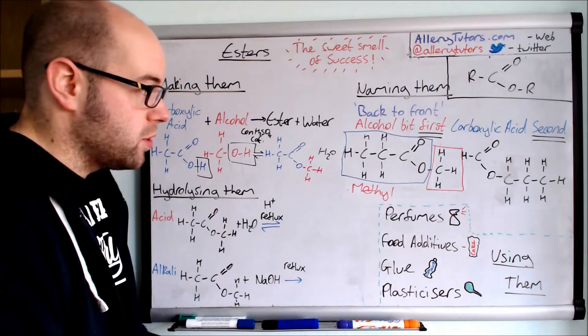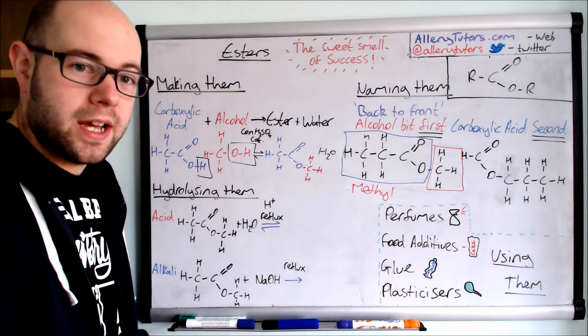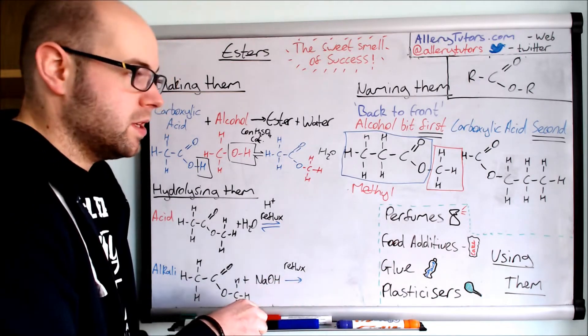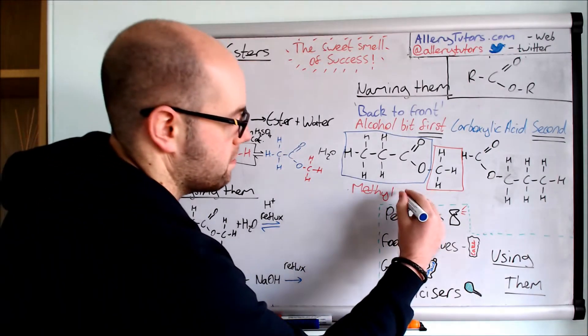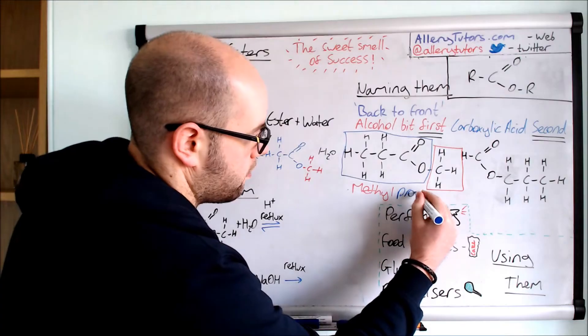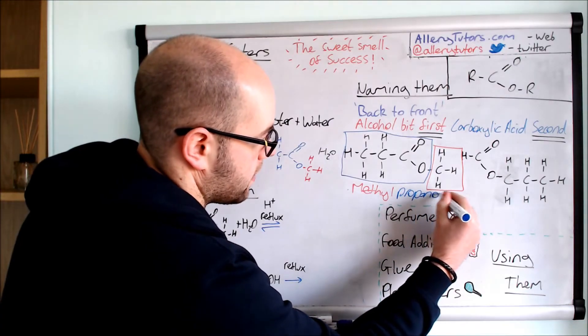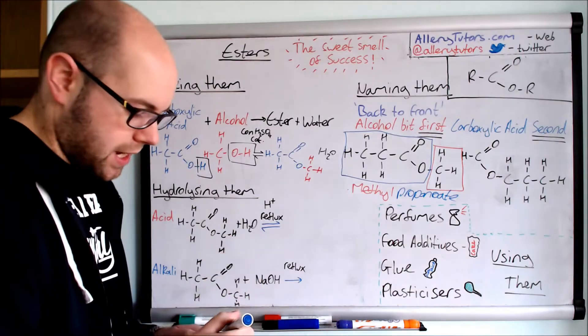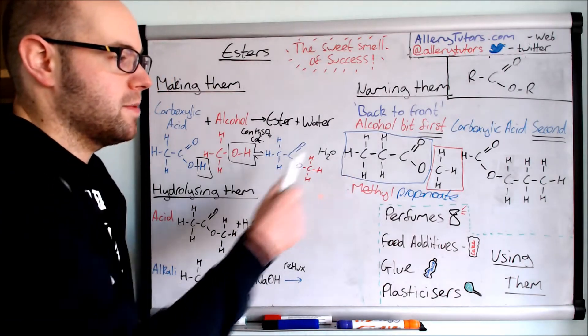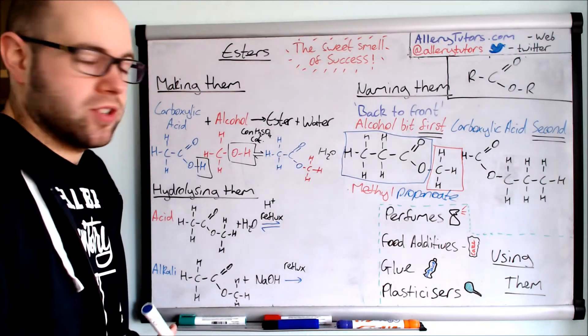And then the blue bit, you can see we've got three carbons there. So them three carbons tell us that it's got to be propane. So this is propanoate and this is how we name them. So methyl propanoate. And they always end in that bit at the end there, -oate at the end. So you just find out how many carbons you've got in each side.